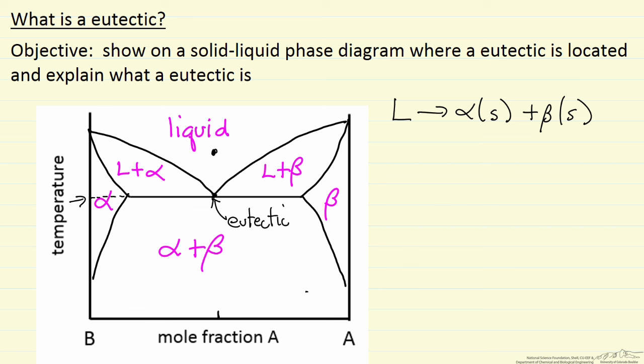the alpha phase and the beta phase. So the eutectic solid is going to look something like this in an expanded view. The microstructure: alpha phase, beta phase, alpha phase, beta phase, and so forth.